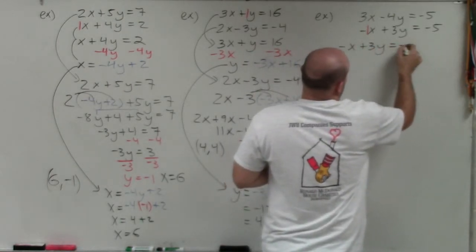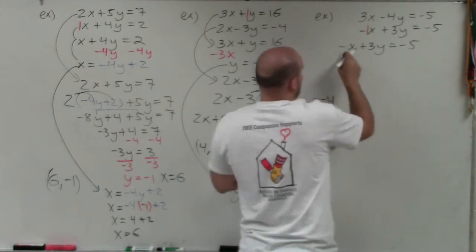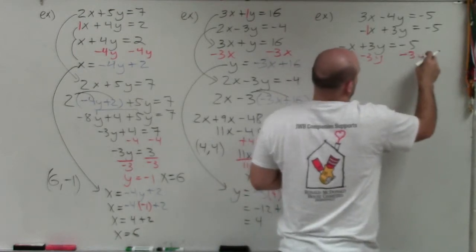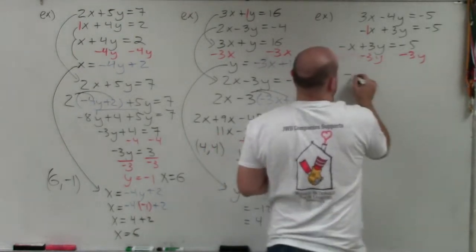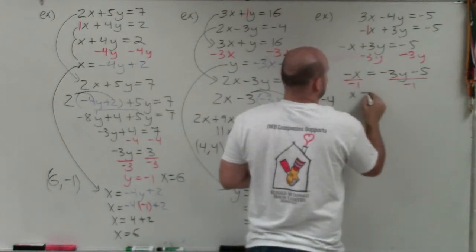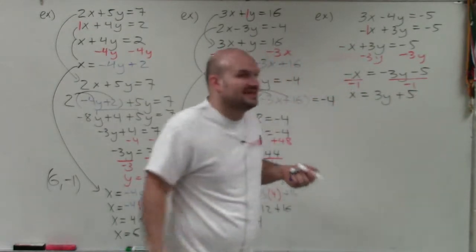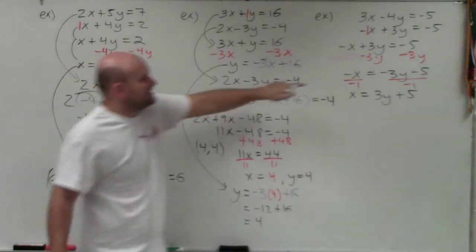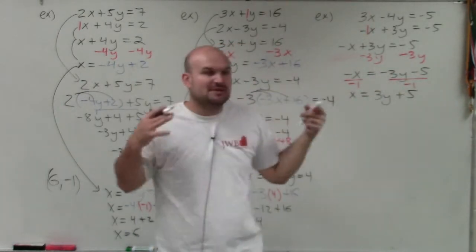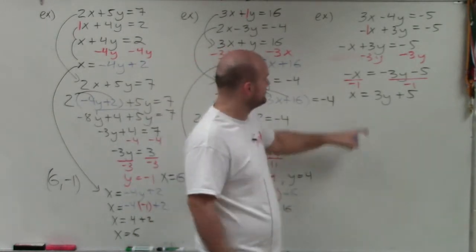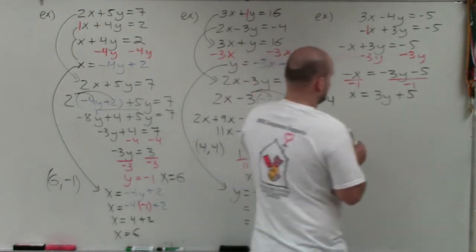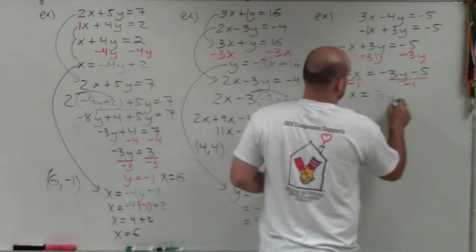So I have negative x plus 3y equals negative 5. To solve for x, I subtract 3y from both sides: negative x equals negative 3y minus 5. Then I divide by negative 1 to undo the negative: x equals positive 3y plus 5. As you can see, because of the negative 1 coefficient, it takes two steps instead of one. That's why we prefer coefficients of 1 or negative 1 — otherwise you'd also get fractions.